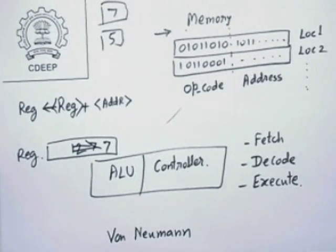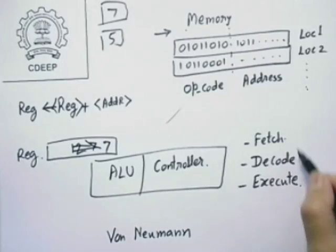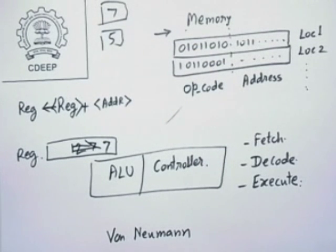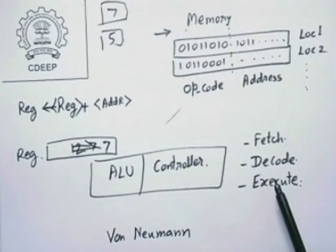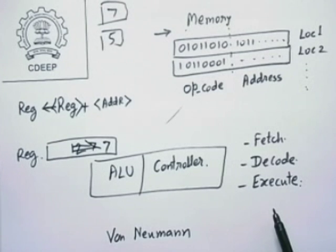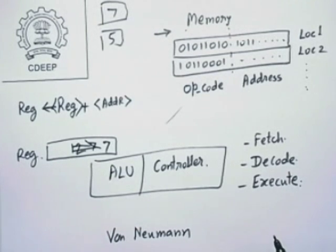Second question: how long does it take to execute one instruction? Each instruction requires three phases—fetch, decode, and execute—each requiring at least one clock pulse. Activities inside the computer happen at clock pulses. So minimum three clock cycles appear to be required to execute one instruction. This would make the whole operation very slow, so designers created the notion of a pipeline to make it faster.